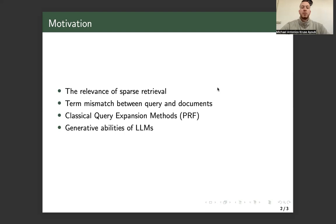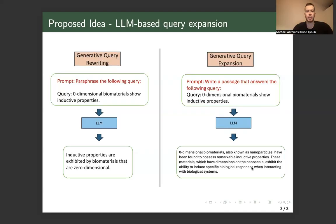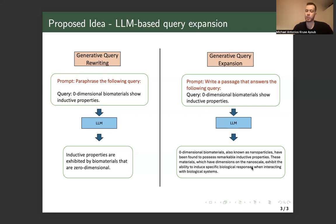Therefore, we are interested in observing the effect that LLMs can have for query expansion for sparse retrieval methods. We propose two different methods for using LLM-based query expansion. The first approach is called generative query rewriting, where we instruct a prompt to paraphrase each query, and we do it repeatedly three times, meaning we will have three rephrased queries for each query. We then experiment with different string concatenation strategies to optimize this process.